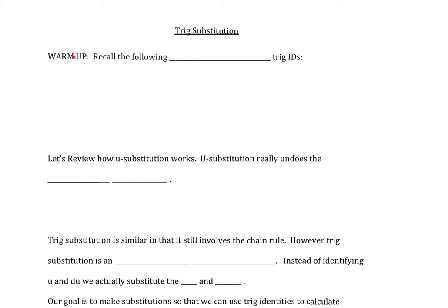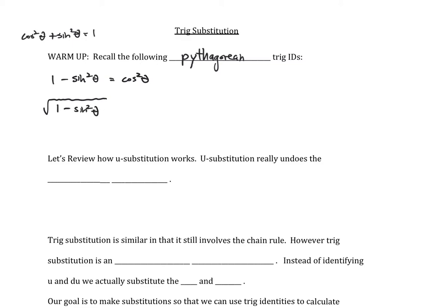As a warm-up, let's recall the following Pythagorean identities. If I start with the identity cosine squared theta plus sine squared theta equals one, and I solve for cosine squared, I get one minus sine squared theta equals cosine squared theta. Taking the square root of both sides gives us the square root of one minus sine squared theta equals cosine of theta.